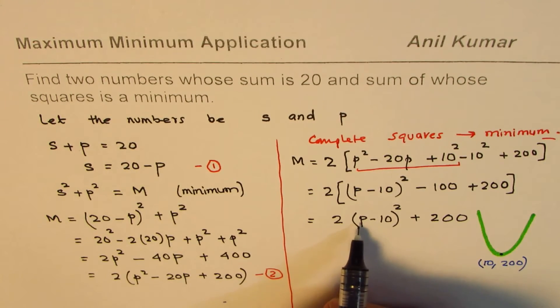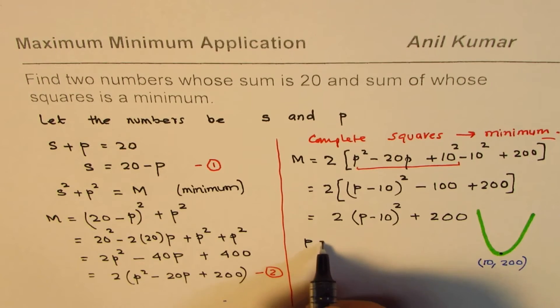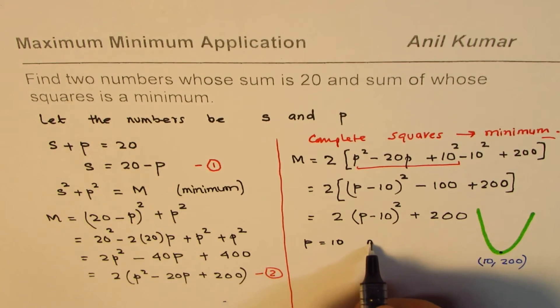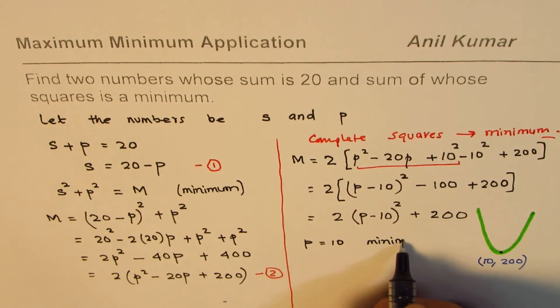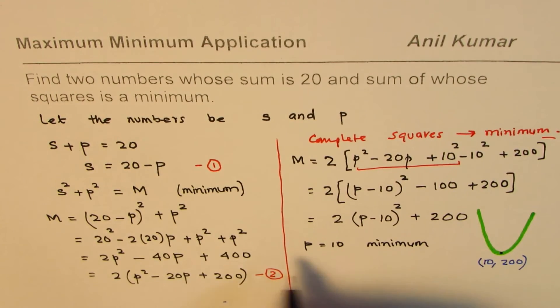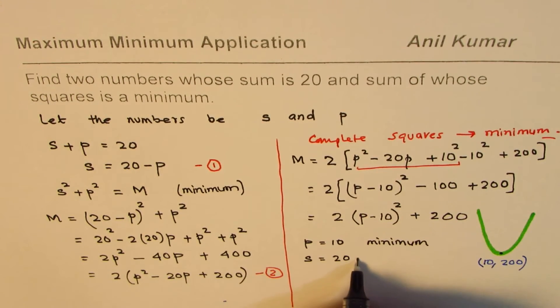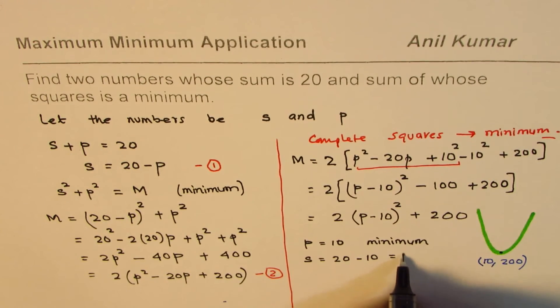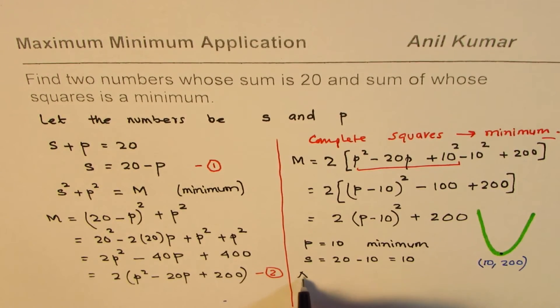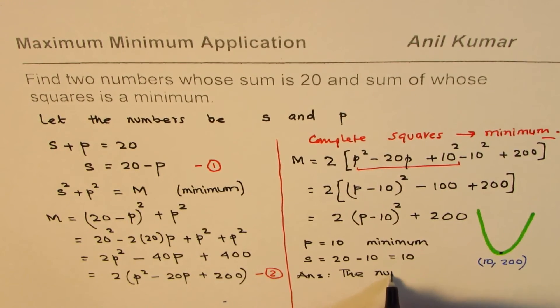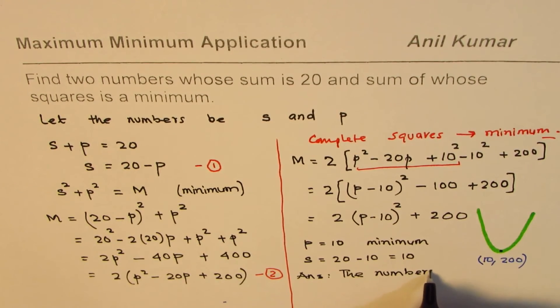So we get our answer. p equals 10 will give us minimum. Now if p is 10, what is s for us? s will be equals to 20 minus 10, which is also 10. Therefore our answer is the two numbers are both the same.